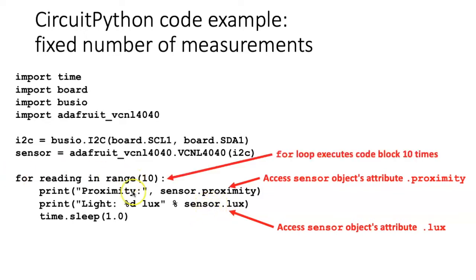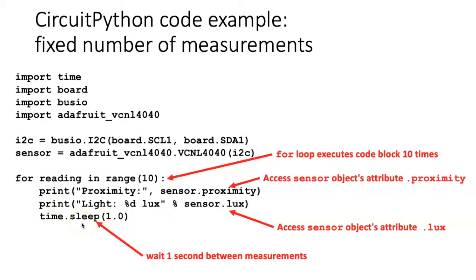I've included this code for printing these two values inside a for loop that will execute 10 times. This indented code block will be repeated 10 times, and by adding a one-second delay at the end of that indented code block, it'll wait one second between taking each of the 10 measurements.